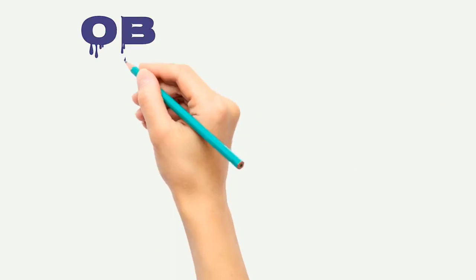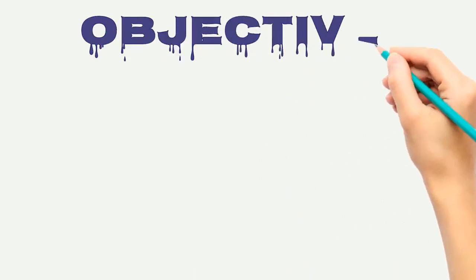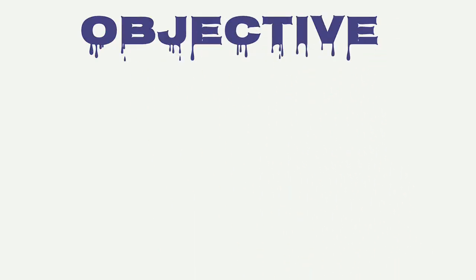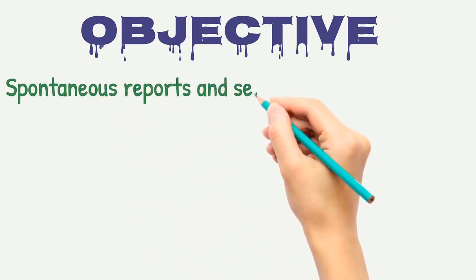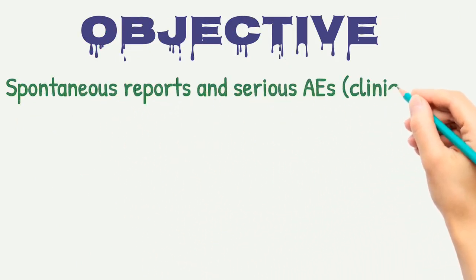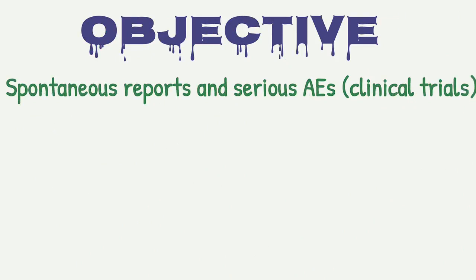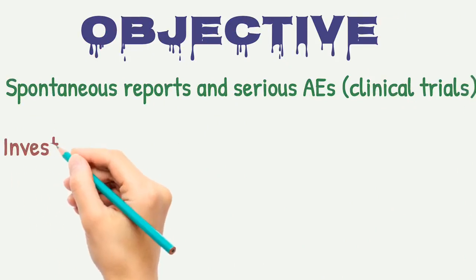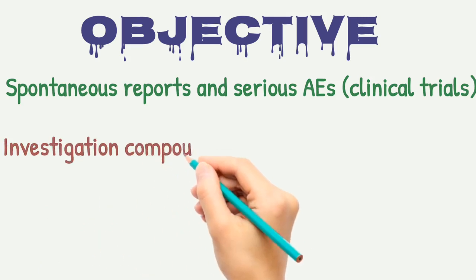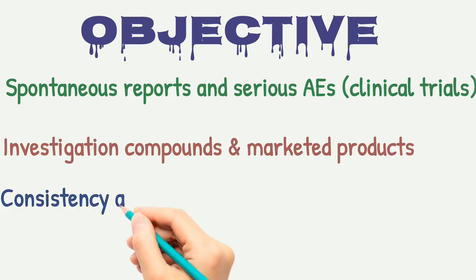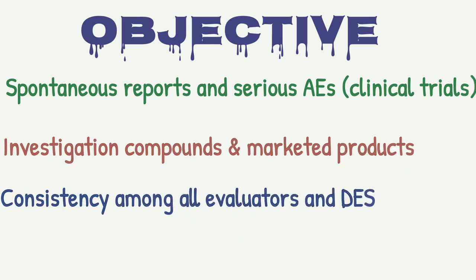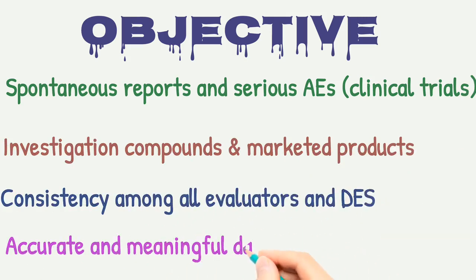First we will see the importance of labeling assessment in pharmacovigilance. The objective is the evaluation of spontaneous reports and serious adverse events from clinical trials to accurately and consistently report adverse event information to health authorities globally. Monitor the safety of investigational compounds and marketed products. Ensure consistency among all evaluators and data entry sites, as well as maintain accurate and meaningful databases.